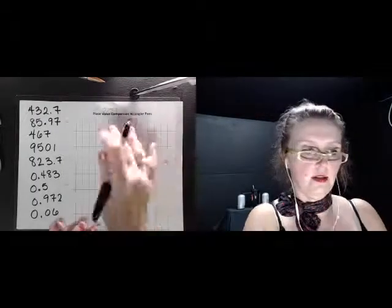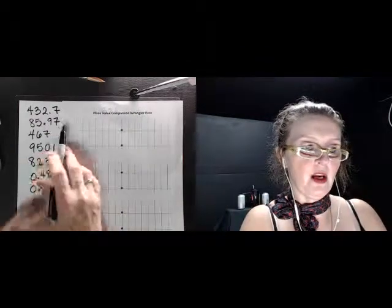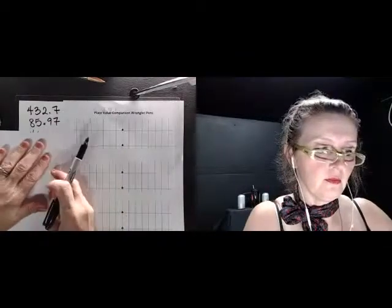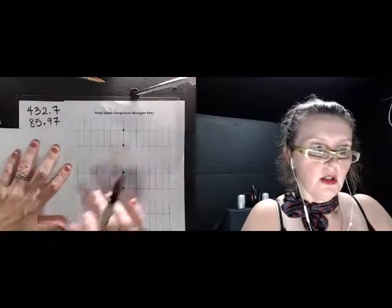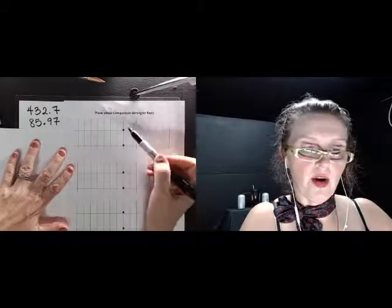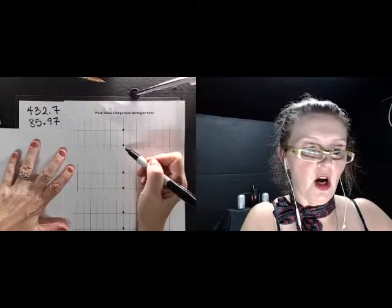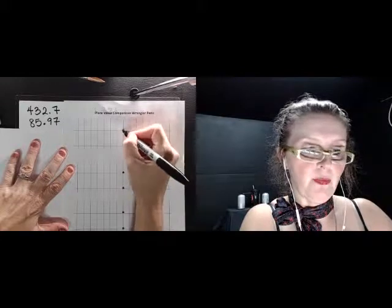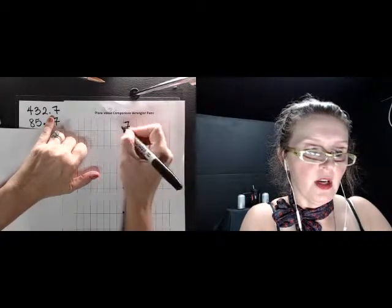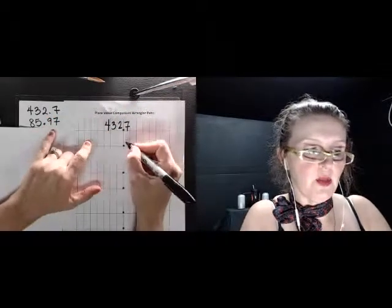Let's compare 432.7 to 85.97. So when kids look at this, there's lots of digits and there's a lot of things going on. So what I've created in this pen is where the decimal is for the number at the top and the bottom. So we find the decimal, and so here we have the seven there, we have the two goes here and the three goes here and the four goes here.